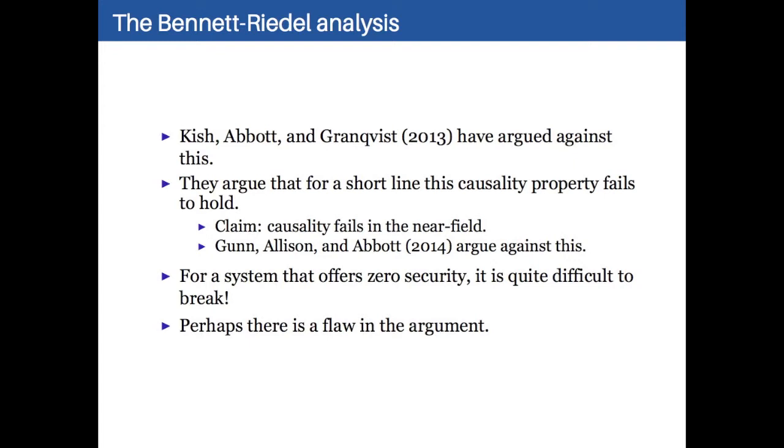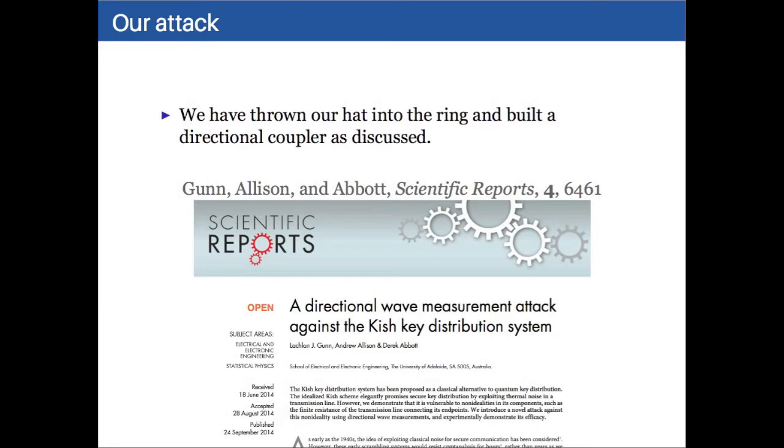It has been argued by the originator of the system that this causality property of Maxwell's equations fails to hold. The reason for that being that there are near field effects which complicate the process and that the use of a directional coupler doesn't really give you the whole story. But the problem is that even if the secrecy rate is zero and so theoretically the system is insecure, for a system that doesn't offer any security, it's really quite difficult to break. So maybe there's a flaw in this information theoretic argument. Maybe there is some complicated physics or maths, some weirdness going on, that means that actually it's more secure than it looks at first.